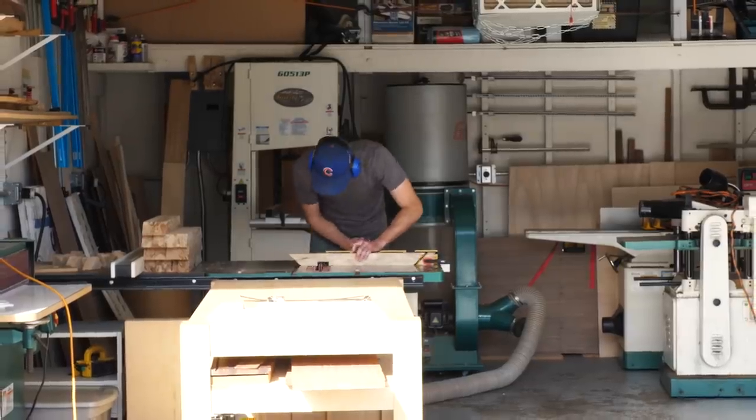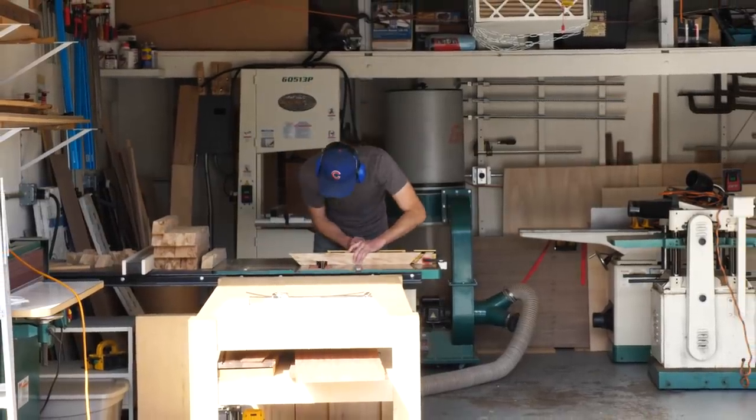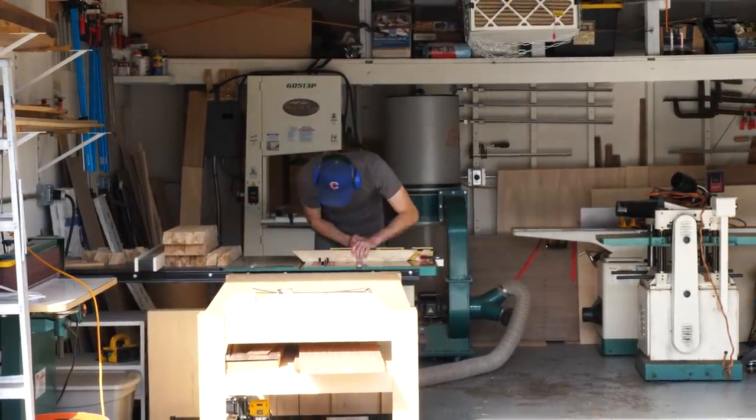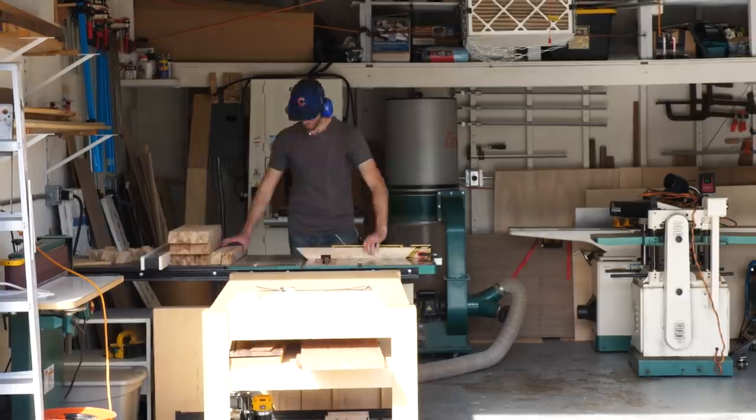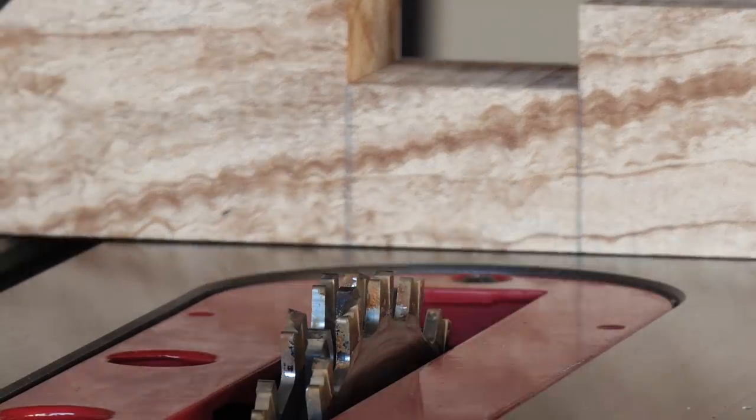So spalted western curly maple, or beeswing-figured bubinga? Nah. But if you got some oak, or cherry, or walnut? Cool.